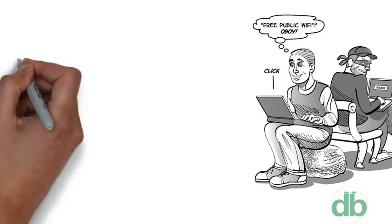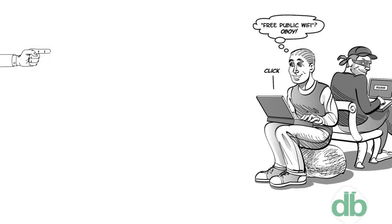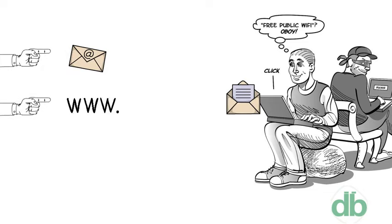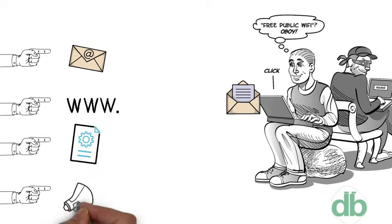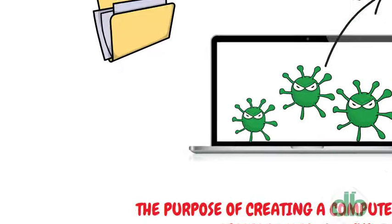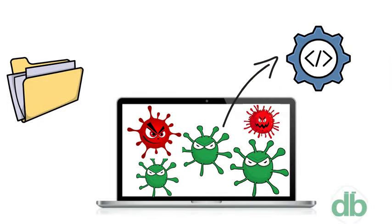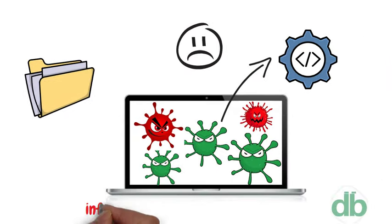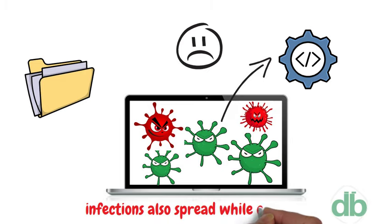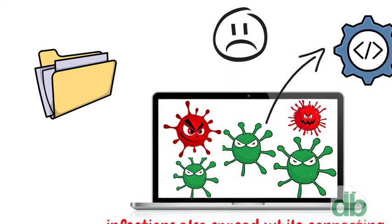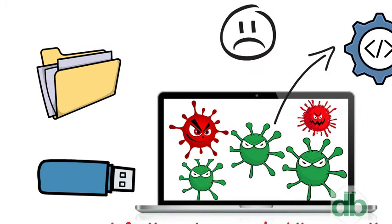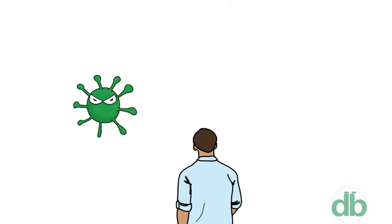One of the ideal methods by which viruses spread is through emails. Opening the attachment in the email, visiting an infected website, clicking on an executable file, or viewing an infected advertisement can cause the virus to spread to your system. Infections also spread while connecting with already infected removable storage devices such as USB drives.